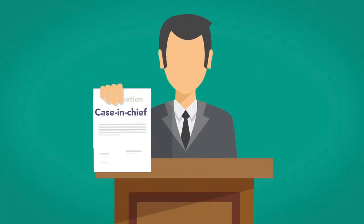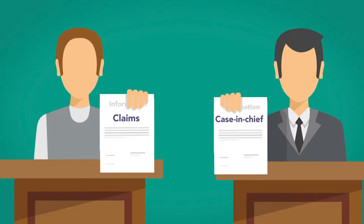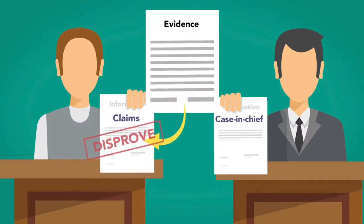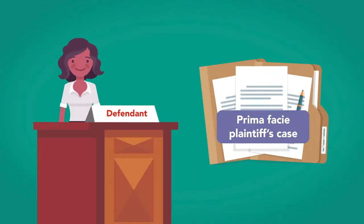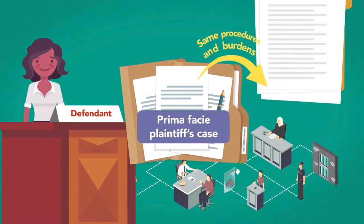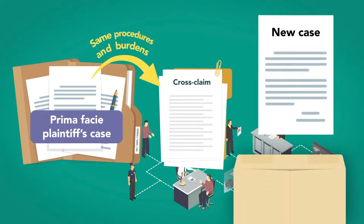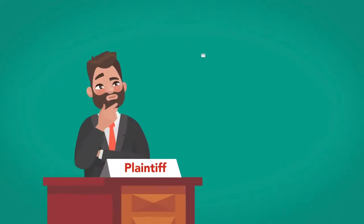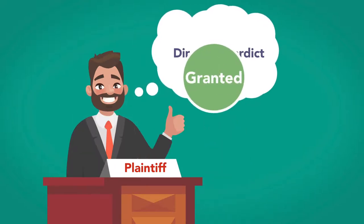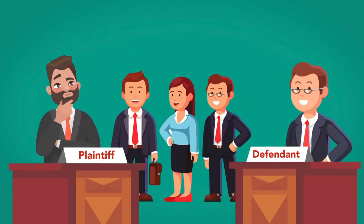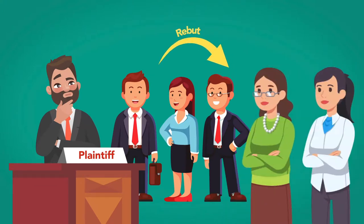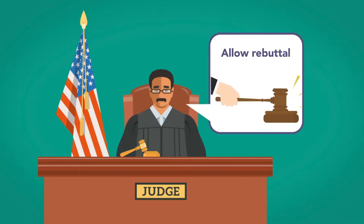The next phase of the trial is the defendant's case in chief. The defendant attempts to rebut the plaintiff's claims by introducing evidence that tends to disprove the plaintiff's claims or at least diminish the weight of the evidence to below the standard of proof. If the defendant has filed a counterclaim, that phase of the case proceeds as a prima facie plaintiff's case for the defendant with the same procedures and burdens as if the counterclaim or cross-claim were a new case. Following the defendant's case in chief, the plaintiff may also move for a directed verdict. If granted, the plaintiff wins; if not, the plaintiff can go on to rebut the defendant's claims by rehabilitating the plaintiff's case, often bringing back witnesses to directly rebut the defendant's witnesses. The extent to which to allow rebuttal — and the defendant's surrebuttal, rebuttal to the rebuttal — is at the discretion of the trial judge.